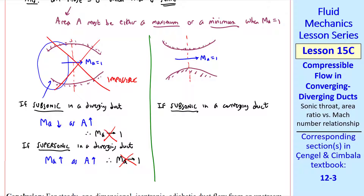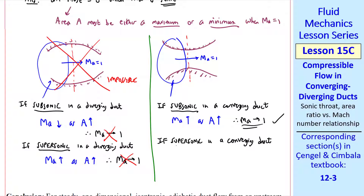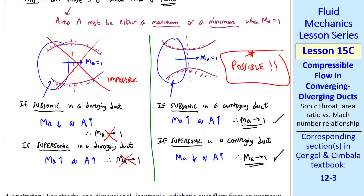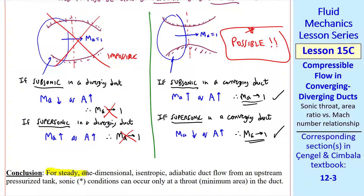Now let's do the same analysis for the second case. If the flow is subsonic in a converging duct, the Mach number goes up as area goes down — this is a subsonic nozzle — so Mach number does indeed approach 1. If the flow is supersonic in this converging duct, Mach number goes down as area goes up, so Mach number can indeed approach 1. This one is possible. We conclude that for steady, one-dimensional, isentropic, adiabatic duct flow from an upstream pressurized tank, sonic or star conditions — critical conditions — can occur only at a throat, a minimum area in the duct.